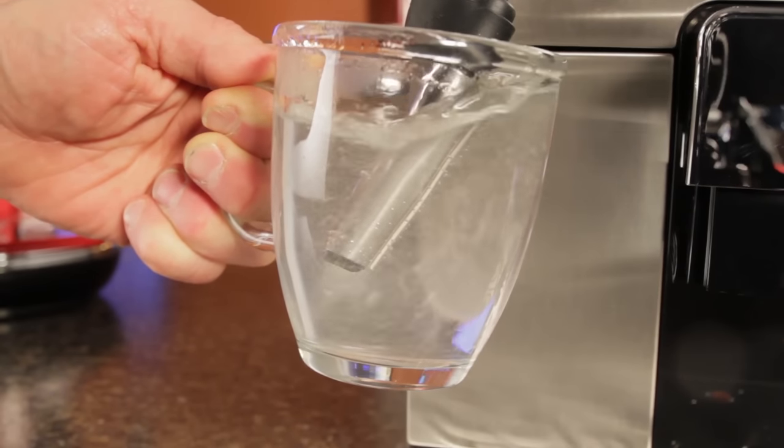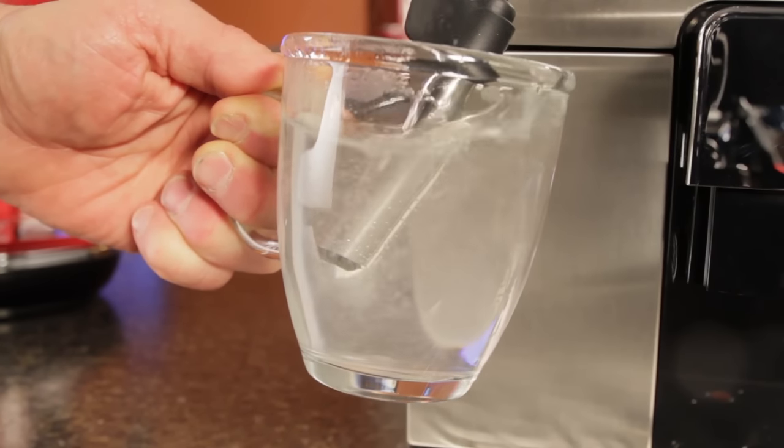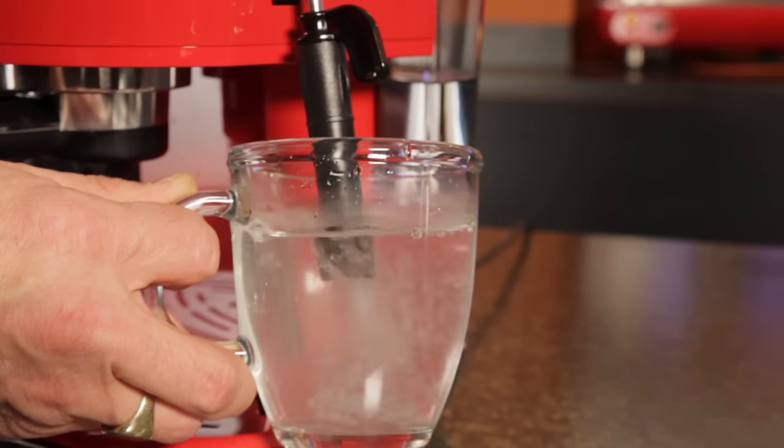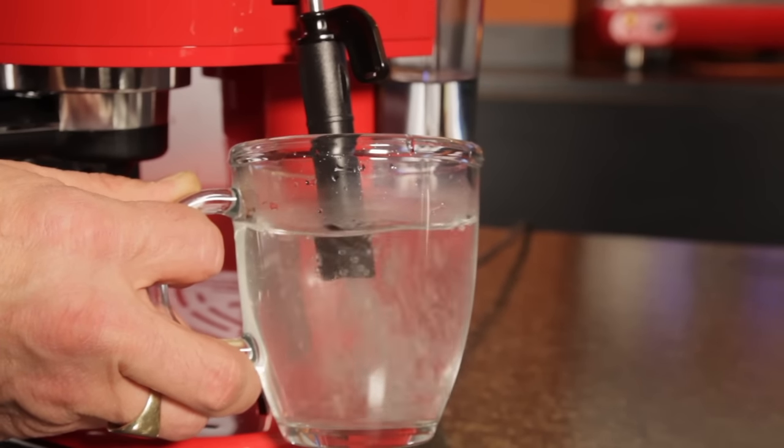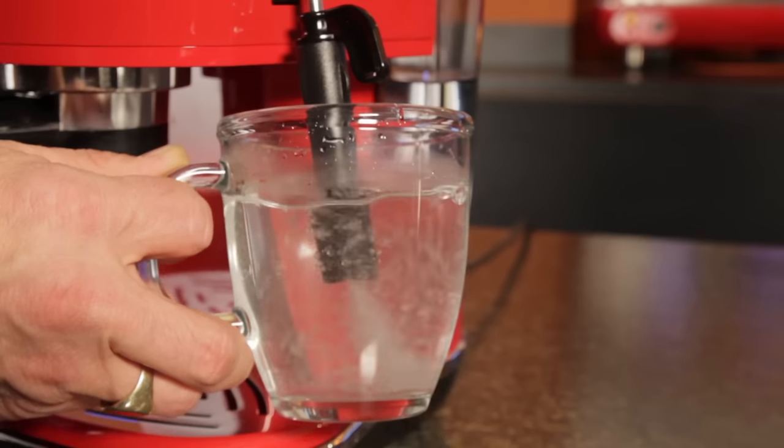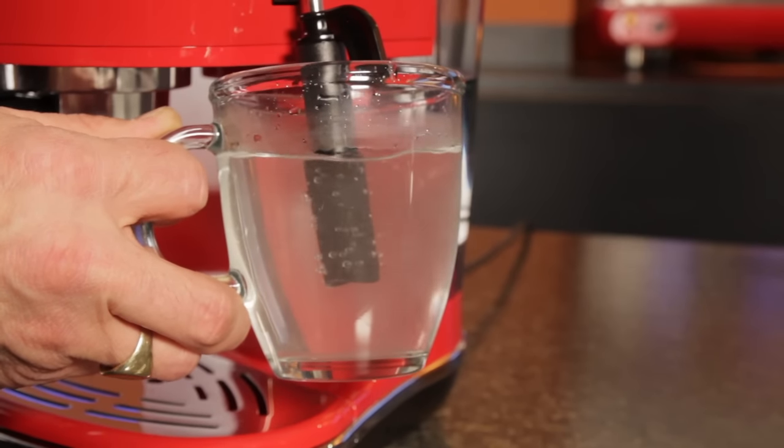As it goes down, less air is added. And it works like this on most every auto-frothing steam wand. So by adjusting the tip position relative to the surface of the milk, you can control the amount of air added.